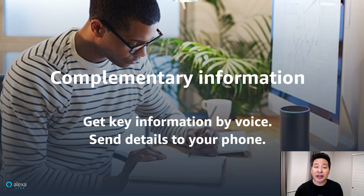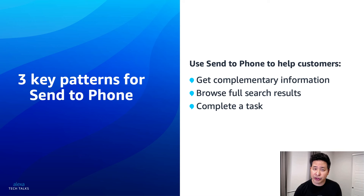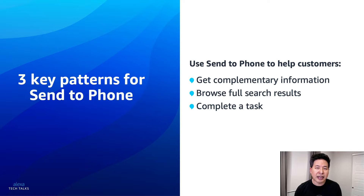Cookpad's use case is a great example of complementary information. After your skill provides key information to the customer by voice, you can follow that up with Send a Phone to offer more detailed information found in your app or website. With Search, your skill can provide top results by voice and use Alexa for Apps to send full search results to the customer's phone, where they can browse, sort, and filter with touch. A third great use case for Send a Phone is completing a task — directing a user to your app or website to take care of an action that might be harder to do with voice alone, like filling out a registration form.